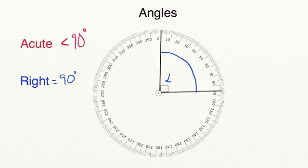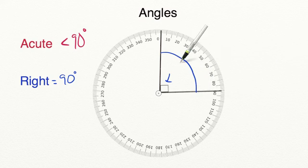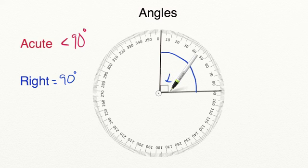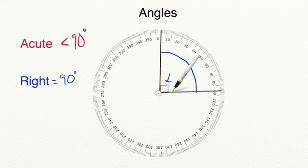When you're comparing whether an angle is acute, right, or obtuse, you always want to compare it to a right angle. If it's smaller than a right angle, it's going to be acute. If it's larger than a right angle, it's going to be obtuse. And you can check your work by trying to draw a perfect square in the corner and seeing if it fits, because a square will always have 90 degree corners.